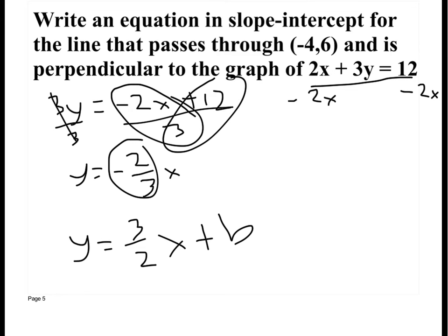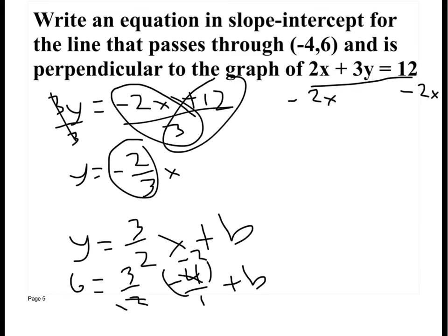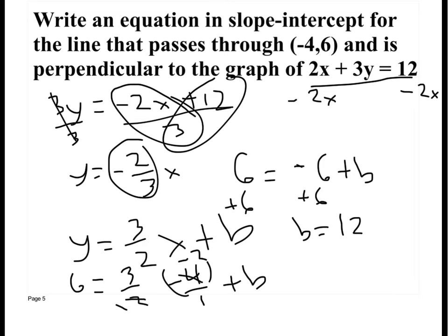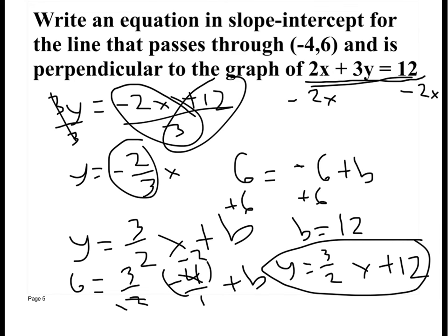My new slope is 3 over 2. Now I need to find my y-intercept. I plug in negative 4 for x and 6 for y, and solve for b. The 2s cancel giving negative 6, so 6 equals negative 6 plus b. Adding 6 to both sides, b equals 12. So my equation is y equals 3 over 2 x plus 12. That equation is perpendicular to the original equation and passes through that point.